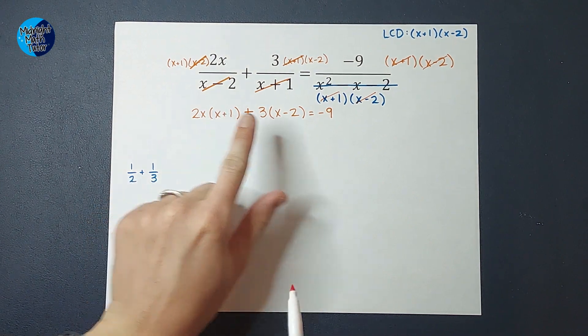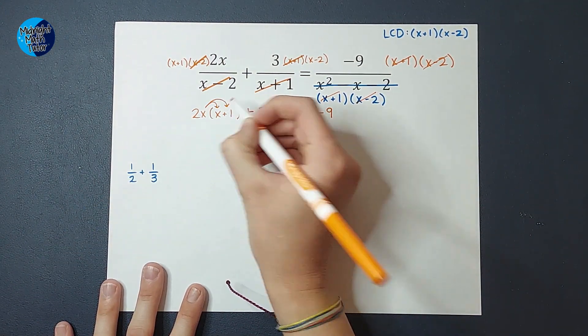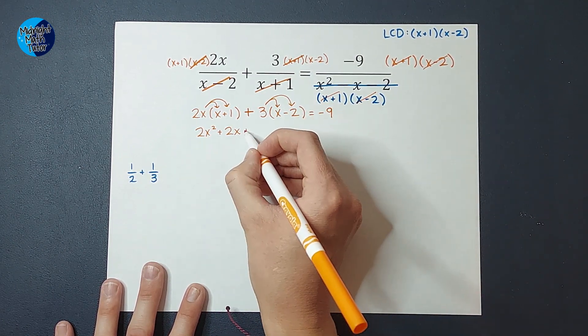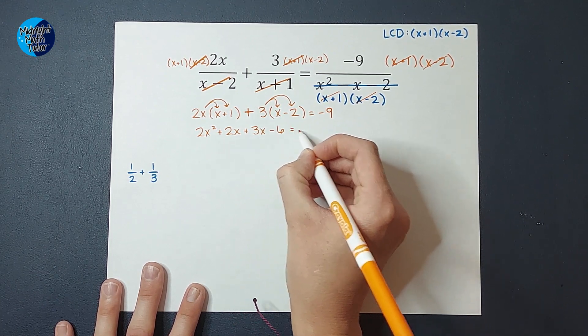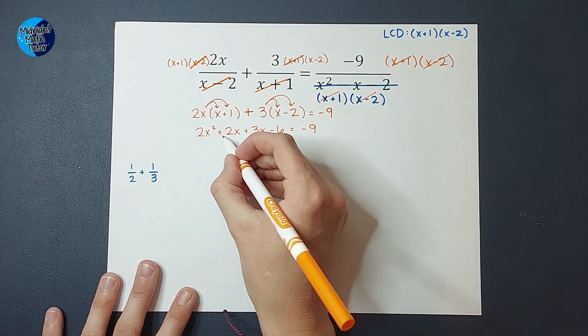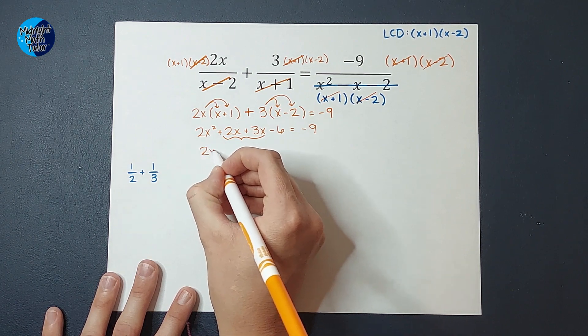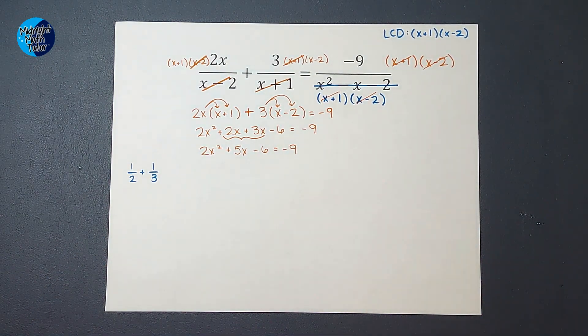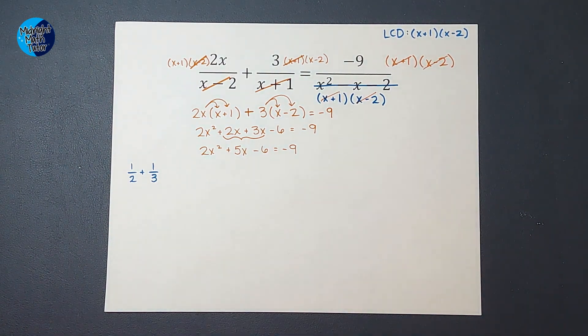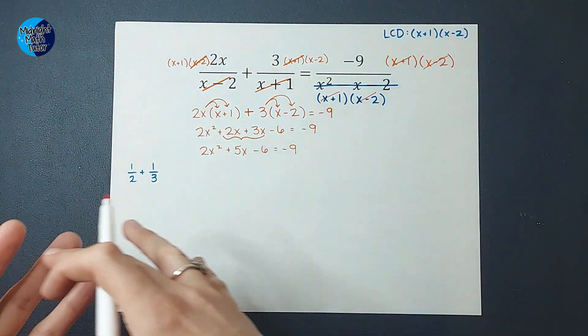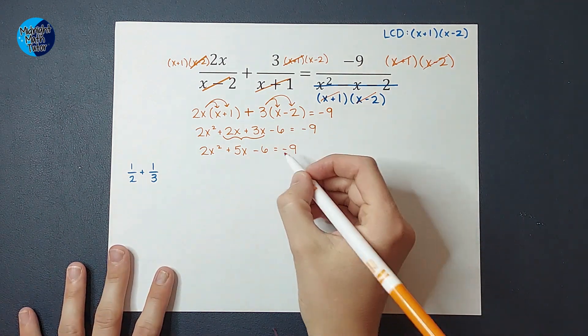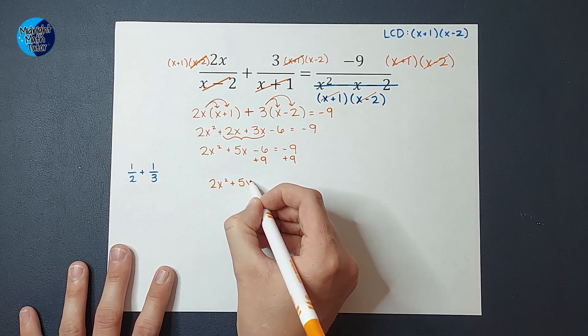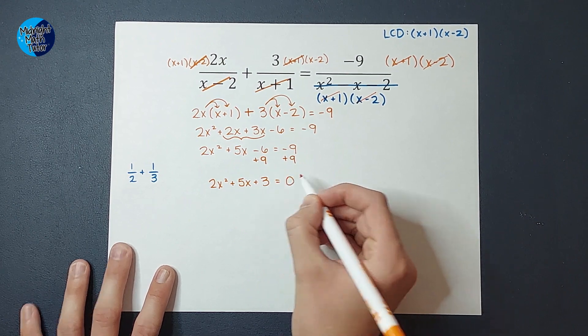So I am going to first distribute the 2x in. So I end up with 2x squared plus 2x. Then I'm going to distribute the 3 in and I get plus 3x minus 6 equals negative 9. Now I'm just combining like terms. So these guys are like terms. So I'm going to end up with 2x squared plus 5x minus 6 equals negative 9. Now normally we're trying to get x alone, which we're still trying to do that, but I've got an x squared and an x. So we got to handle it a little bit differently.